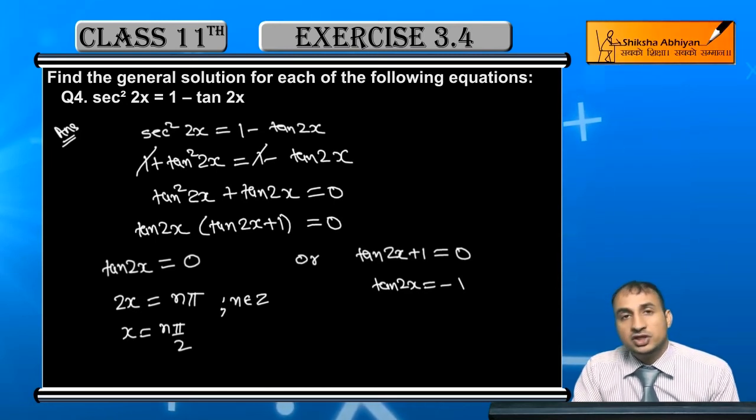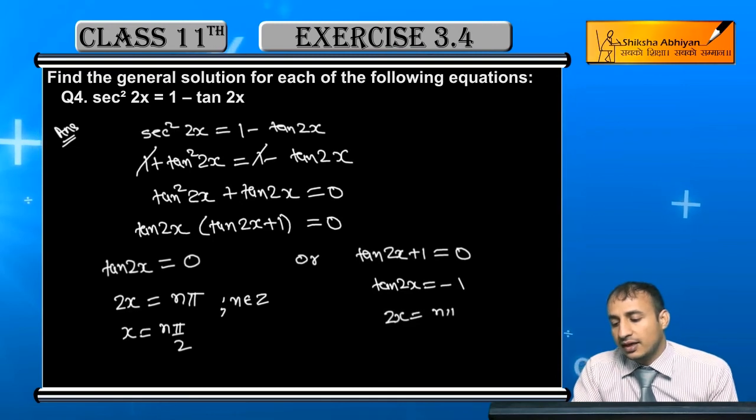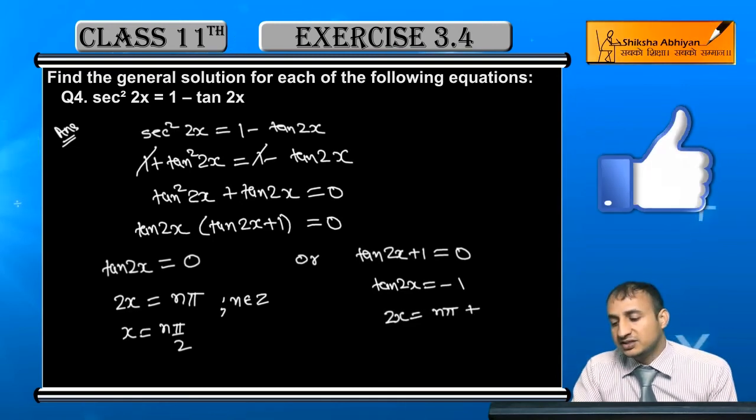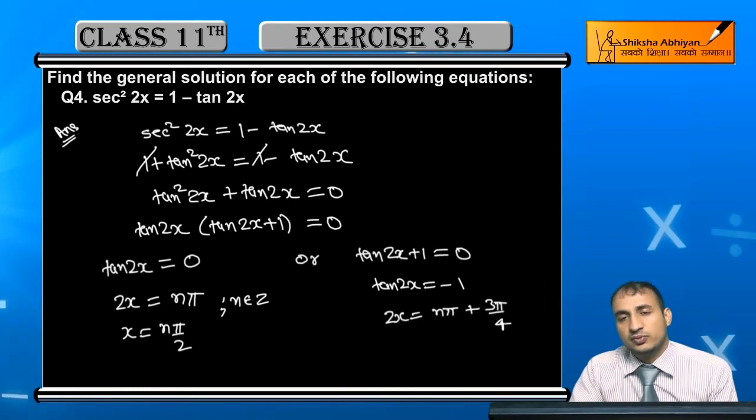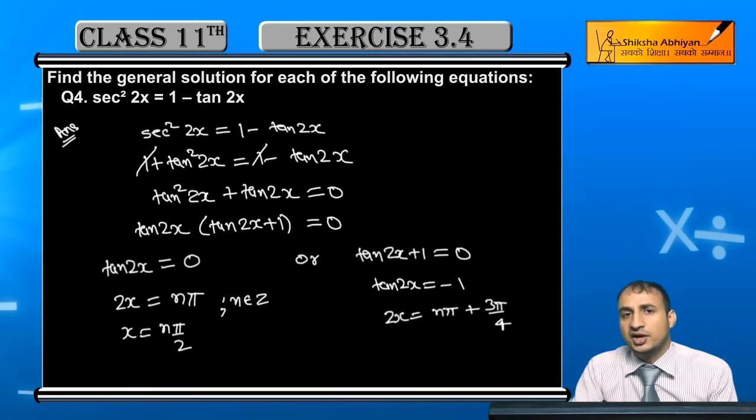It will be in either the second quadrant or the fourth quadrant. So I will take those quadrants. I can write 2x = nπ + 3π/4, because at 3π/4 the value is -1 in that quadrant.